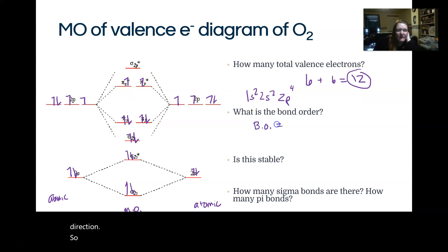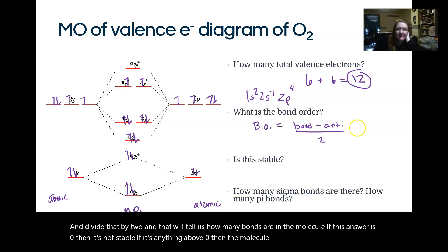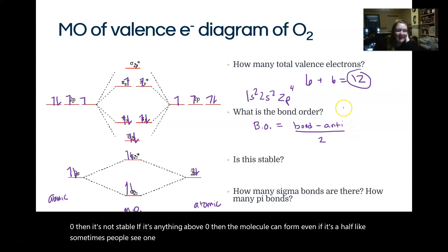So the bond order is how to figure out whether the molecule will form or not. Essentially, we just add up bonding minus antibonding and divide that by 2. And that will tell us how many bonds are in the molecule. If this answer is 0, then it's not stable. If it's anything above 0, then the molecule can form, even if it's a half. Sometimes people see 1 and a half and they think that means it can't happen. That's not actually what that means.